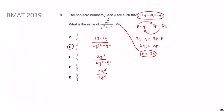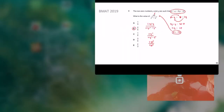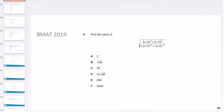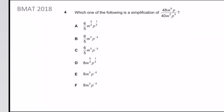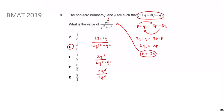Previously we were looking at BMAT 2019 question 4, where it wasn't really obvious what to do first. But once you do the most obvious step and follow that through, you should end up at the correct answer. It wasn't easy to see how you'd go from those equations to a fraction, but following through step by step gives you answer B, which was correct.